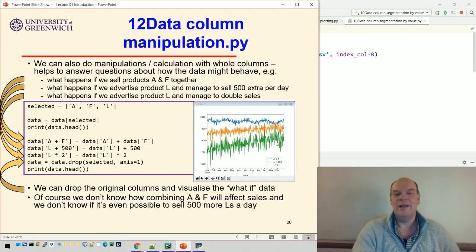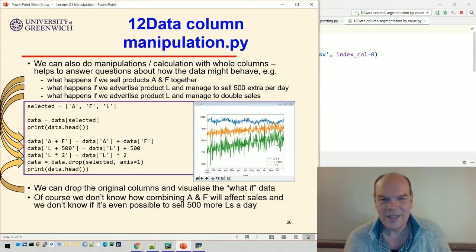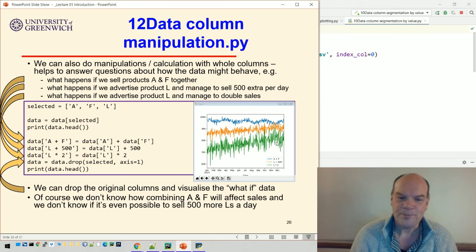So that tells us, that gives us kind of speculative what happens if we did this, what happens if we did that. We don't, of course, we don't know if this is necessarily true. If you combine A and F, does that mean the sales will stay the same? Or does that change somehow the data?